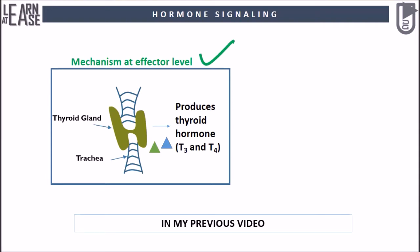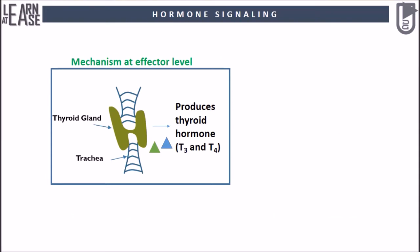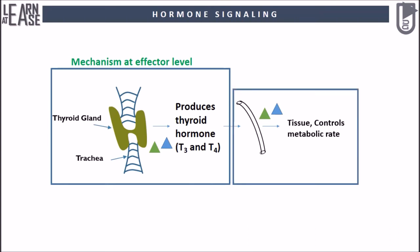Once T3 and T4 are poured into the blood from the thyroid gland, they bind to the protein known as thyroid binding protein and travel in the bloodstream. Thyroid binding protein acts as a carrier of thyroid hormones. These hormones eventually reach the target tissue and produce their effect.